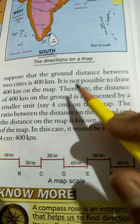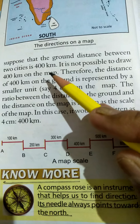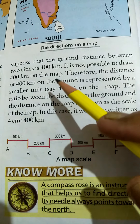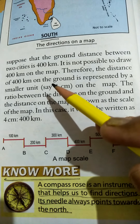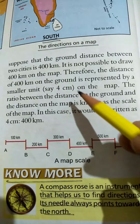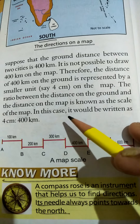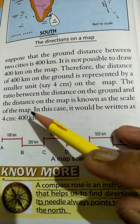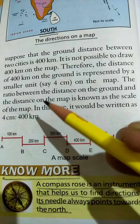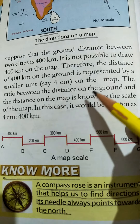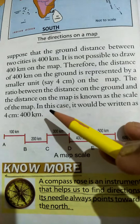For example, the ground distance between two cities is 400 km, but it is not possible to draw 400 km on the map. So we can represent 400 km on the ground as 4 cm on a map. In this case, it would be written as 4 cm equals 400 km. The ratio between the distance on the ground and the distance on the map is known as the scale of the map.